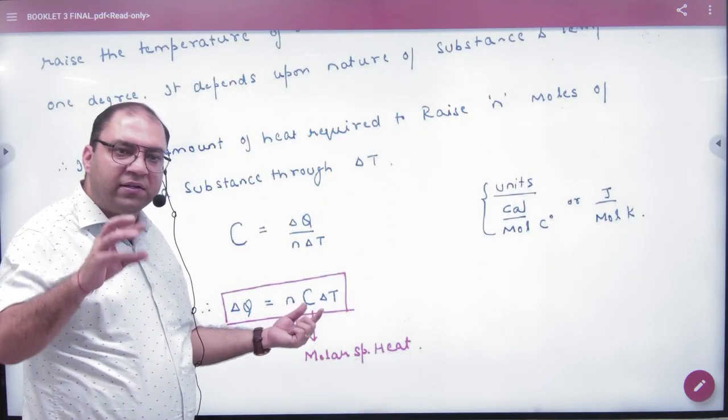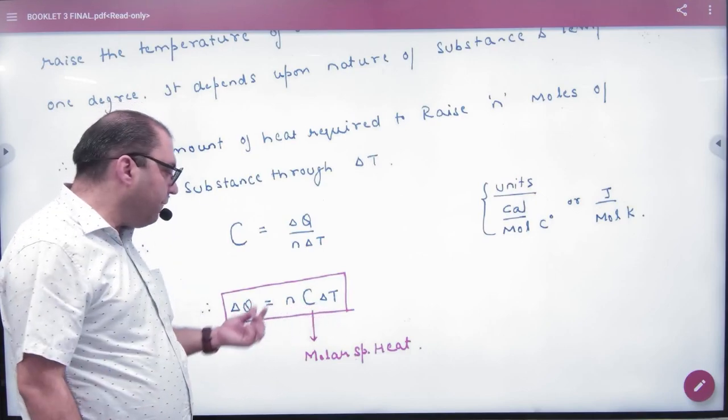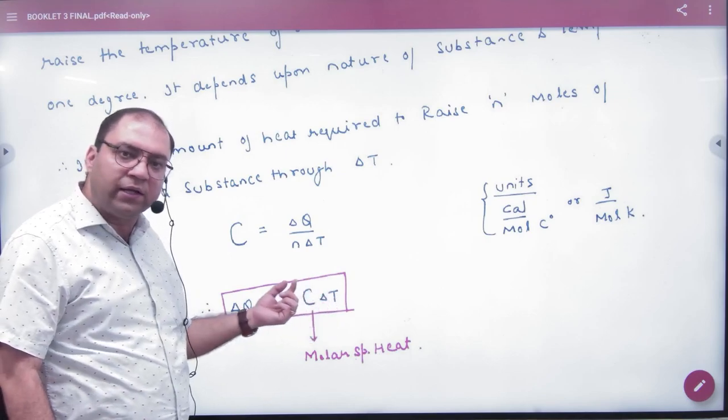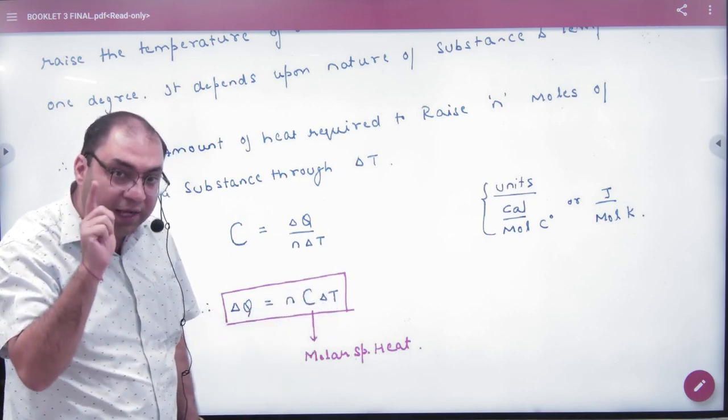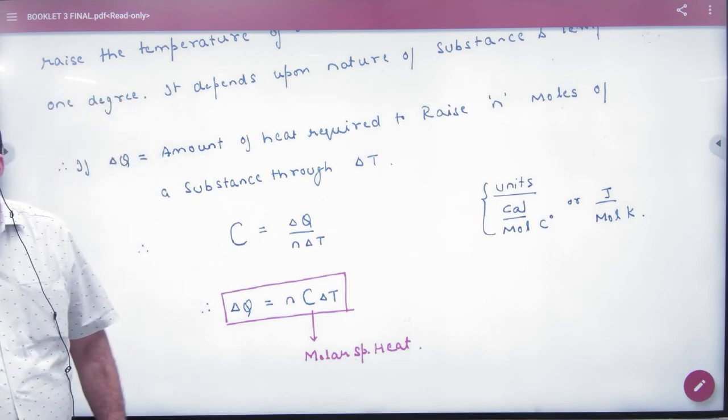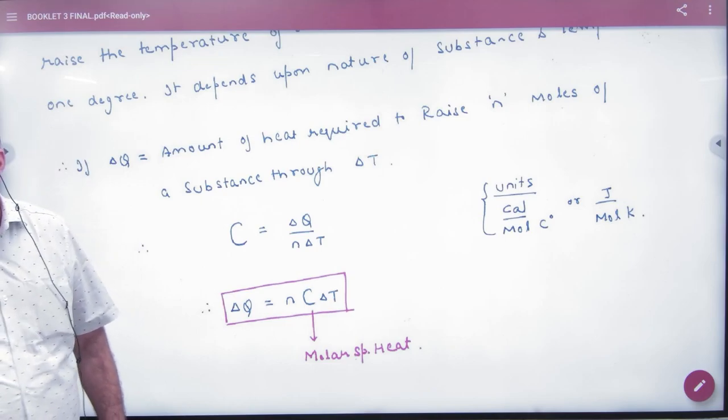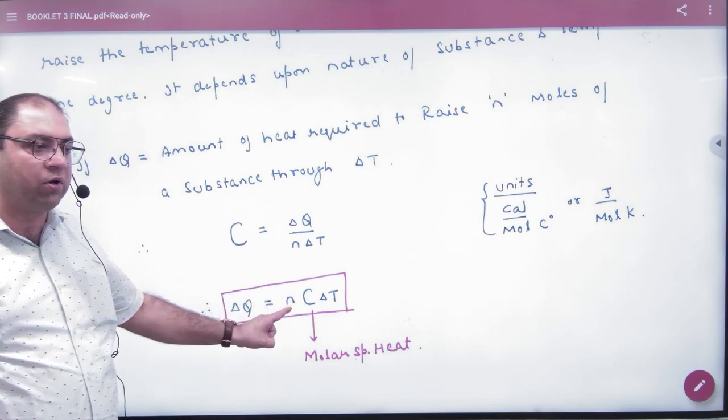And you want to raise the temperature delta T, how much amount of heat will be given? n C delta T, but this C symbol is not small c. This C symbol is big C. This is very important. Small c is specific heat. Big C is molar specific heat, because we have number of moles here.